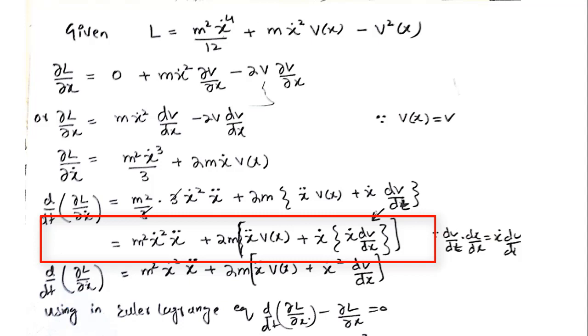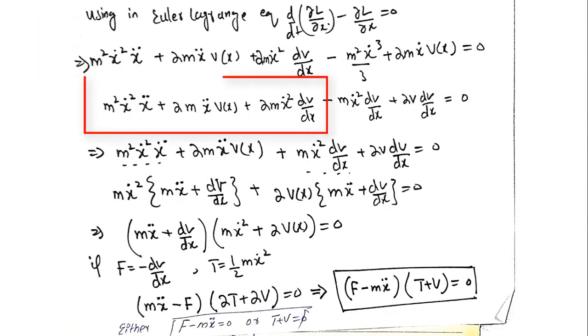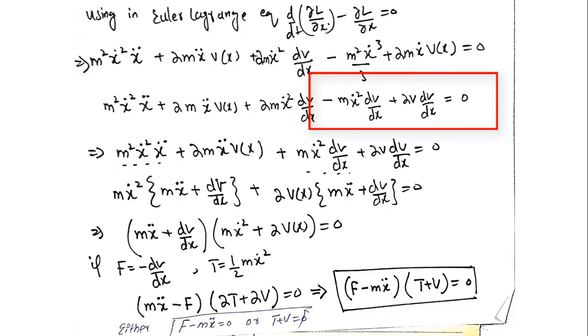So this equation becomes m square x dot square x double dot plus 2m x double dot v of x plus x dot square dv by dx. I can subtract these two equations and I will get the Euler-Lagrange equation. The first term is the time derivative of the differentiated equation with respect to x dot and the second term is from partial L by partial x.